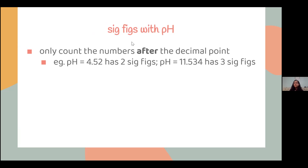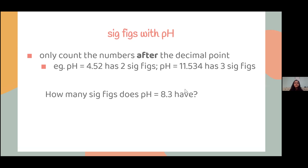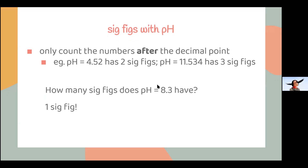When looking at pH, the way you count sig figs is a bit different. You only count the numbers after the decimal point. For example, a pH of 4.52 has only two sig figs — the 5 and the 2. A pH of 11.534 only has three sig figs. A pH of 8.3 has only one sig fig — you only count the stuff after the decimal point.